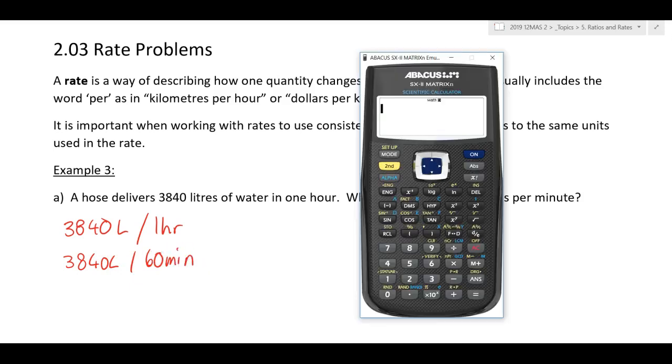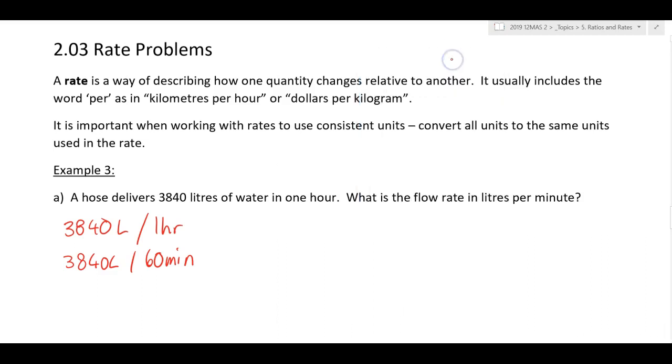Now, calculator! Maybe we could do this in our head, but I don't trust myself right now. 3,840 divided by 60 equals 64 litres per minute. Litres per minute. Okay, see what we did there?